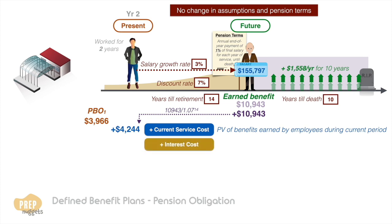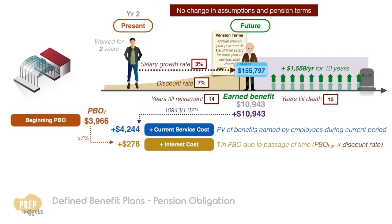However, there is also one more component that's added to the PBO and that is interest cost, which is the increase in pension obligation due to the passage of time. Recall we use the rate of 7% to discount earned benefit to its present value. Since one year has passed, we have to add on 7% to the beginning PBO. The interest cost is therefore calculated as the beginning PBO times the discount rate. Add this all up to the beginning PBO, we get an ending PBO of $8,488.